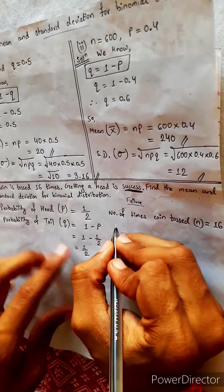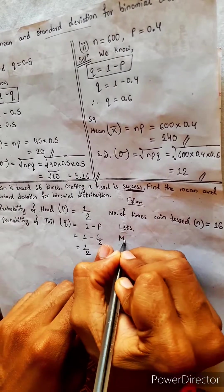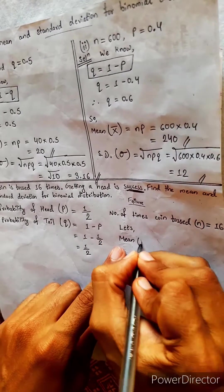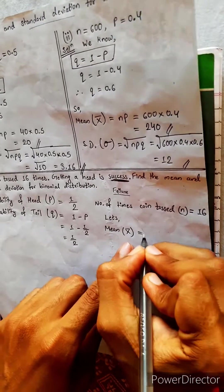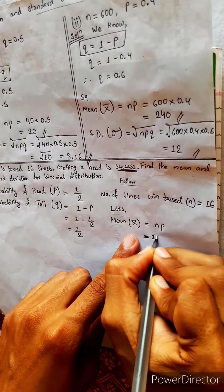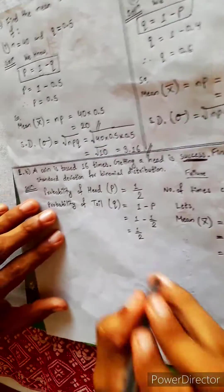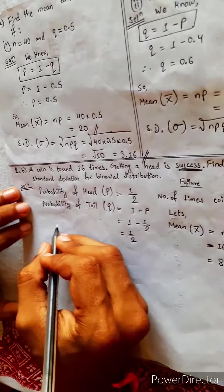Let's find mean. Mean is given by x bar. The formula is np. N is 16, p is 1/2, so it is 8. We got the mean.